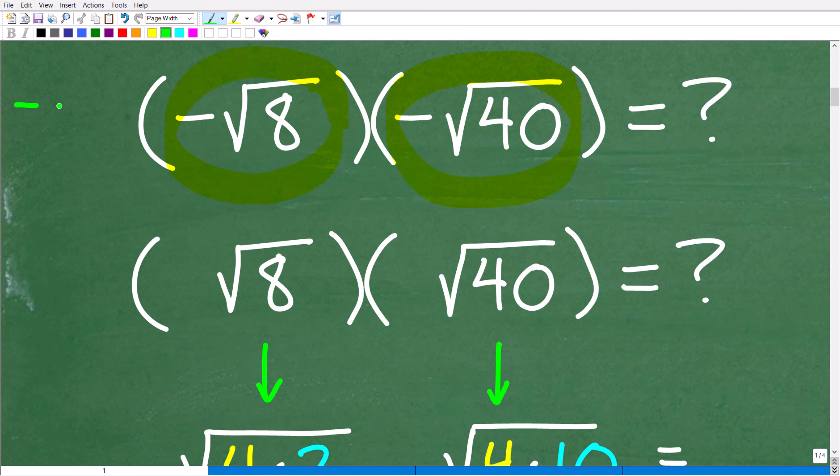So a negative number times a negative number is what? Hopefully, you answered positive. So just stand back for a second and let's just deal with these negative signs right now. A negative times a negative is positive. So we know our answer is going to be positive. So we could just disregard the negative signs at this point in the problem and just think of the problem as the square root of 8 times the square root of 40.